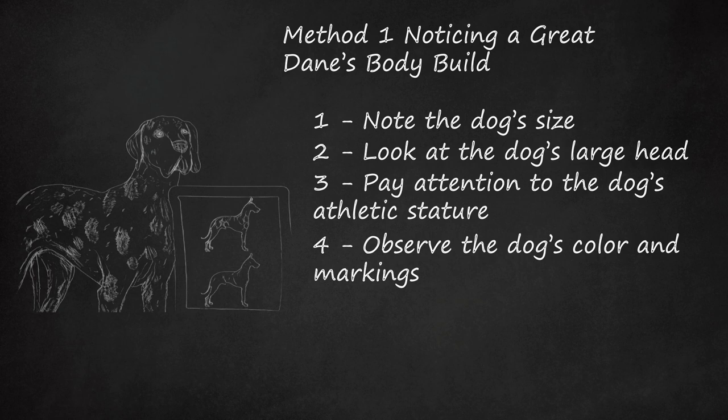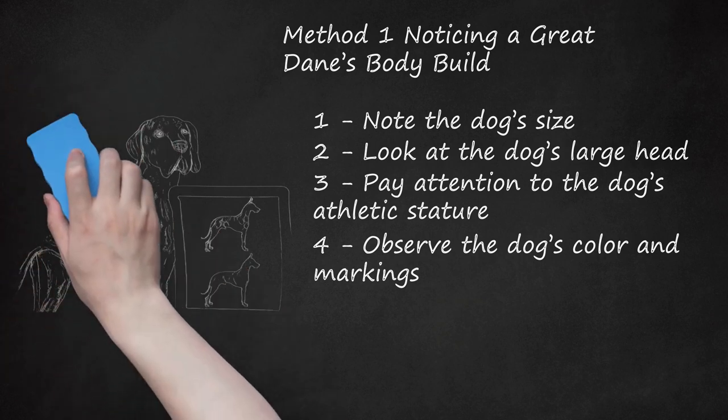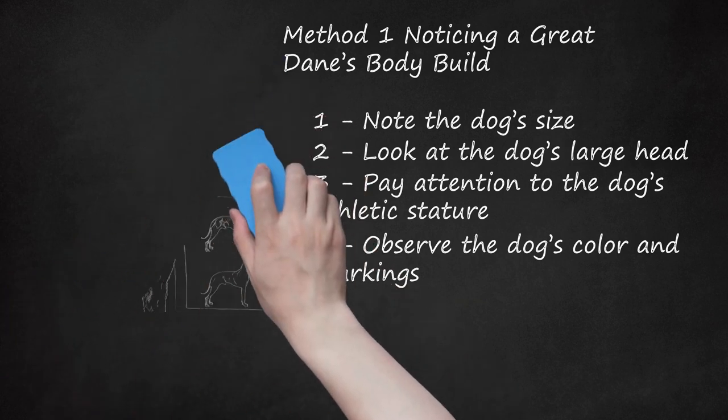Some Great Danes are black, black and white, or white. Dogs with a mantle coat have black coats with a white base coat. Great Danes can have fawn coats, which are a lighter brown or tan. Some have speckled or striped coats. These coats include harlequin, merle, and brindle coats. A Great Dane can also have a silver-toned coat, which is categorized as a blue coat.